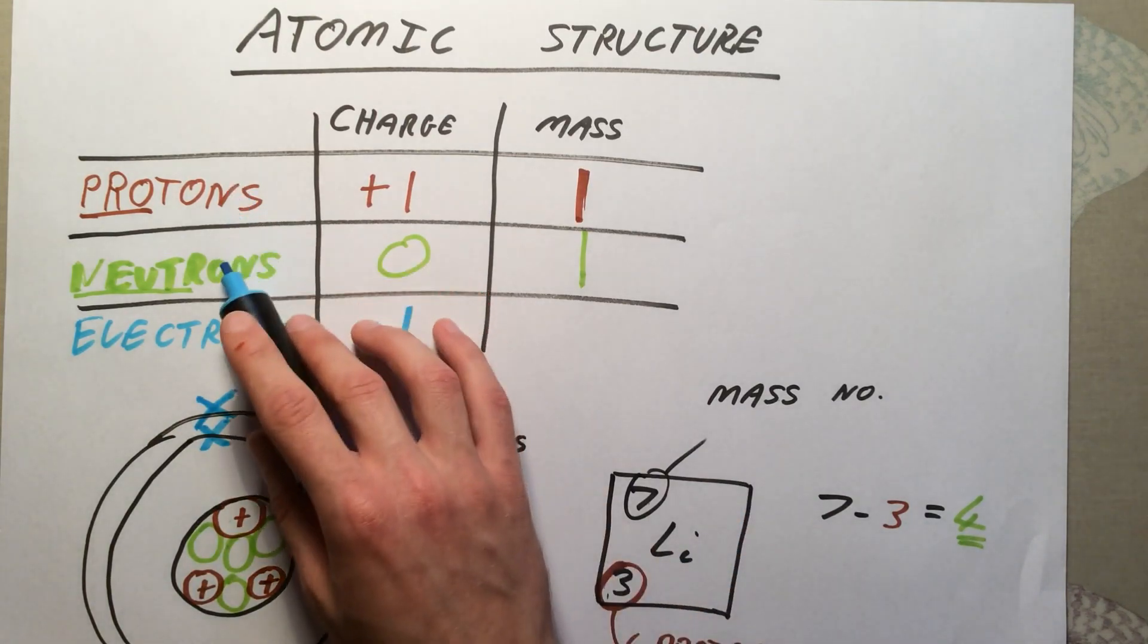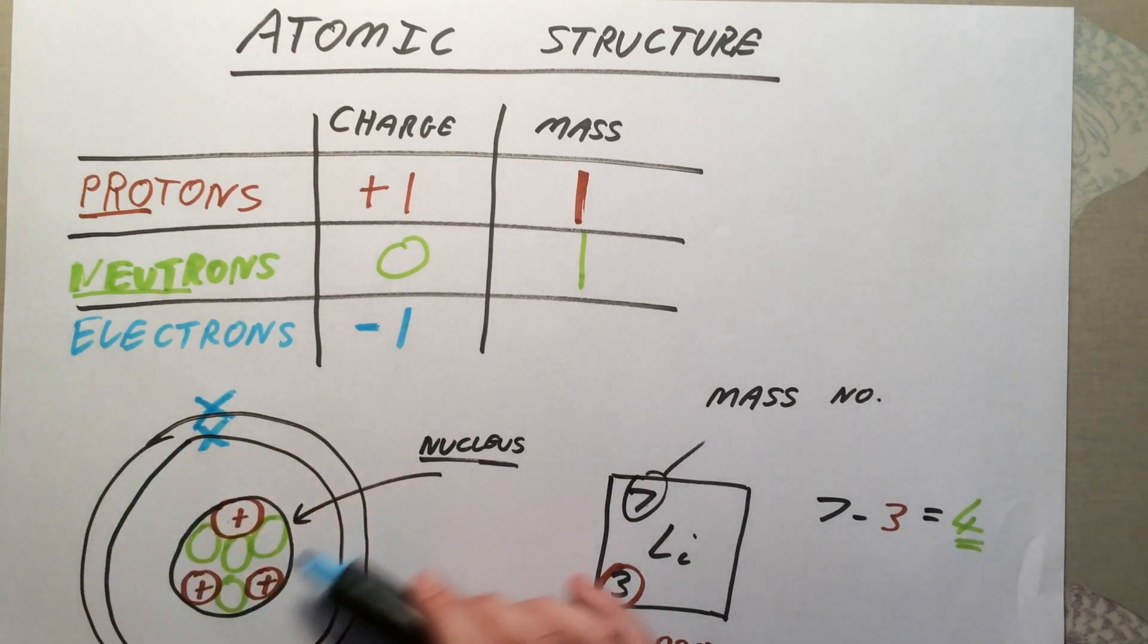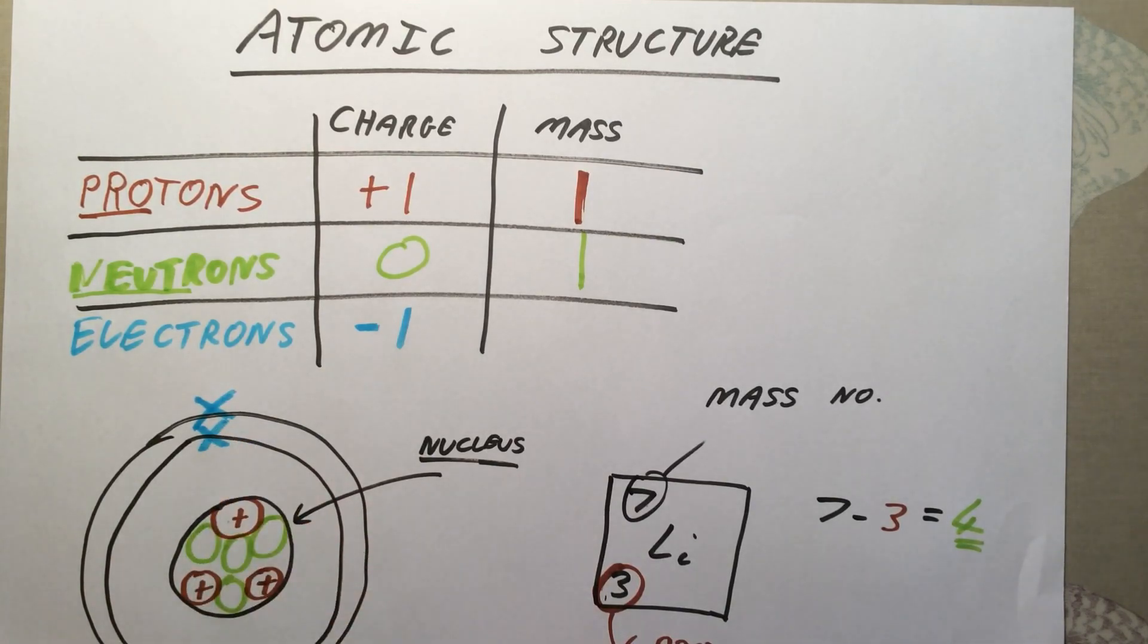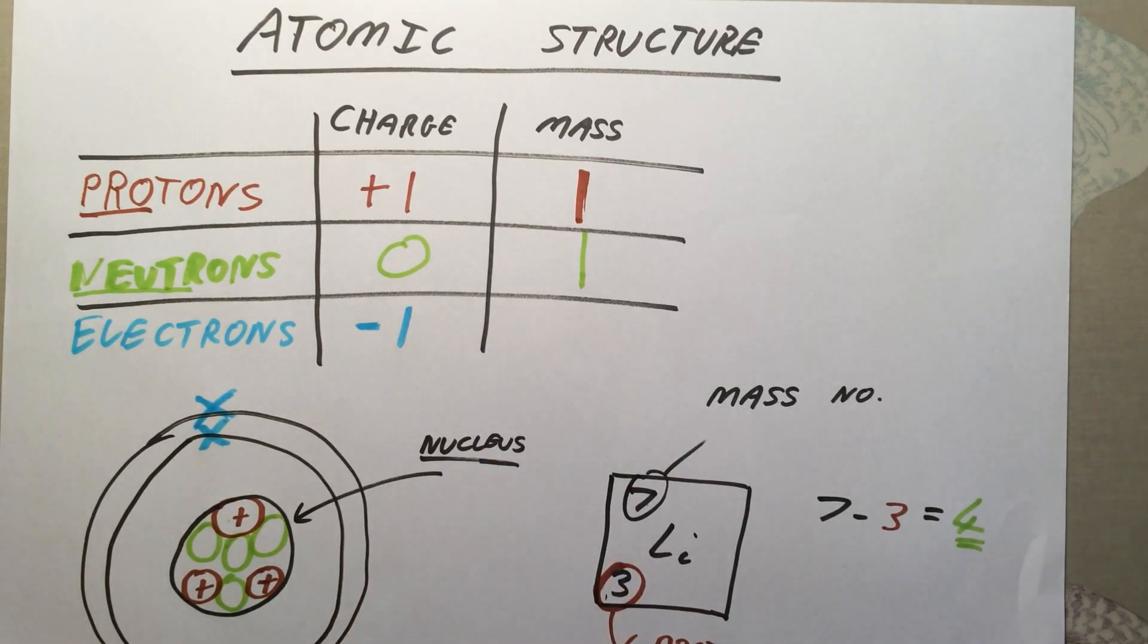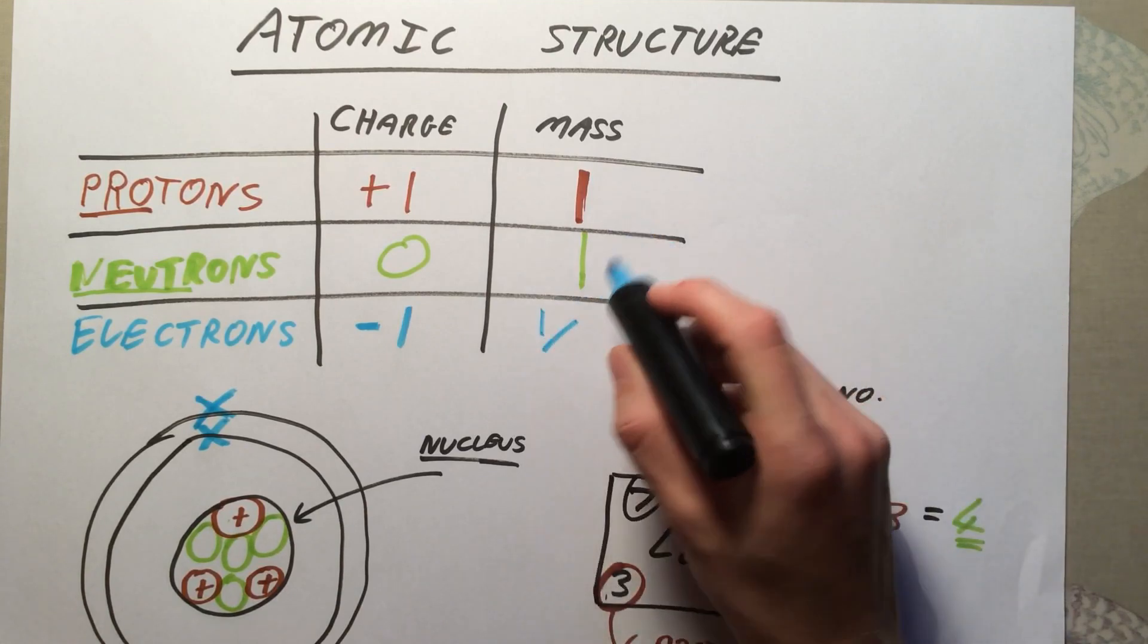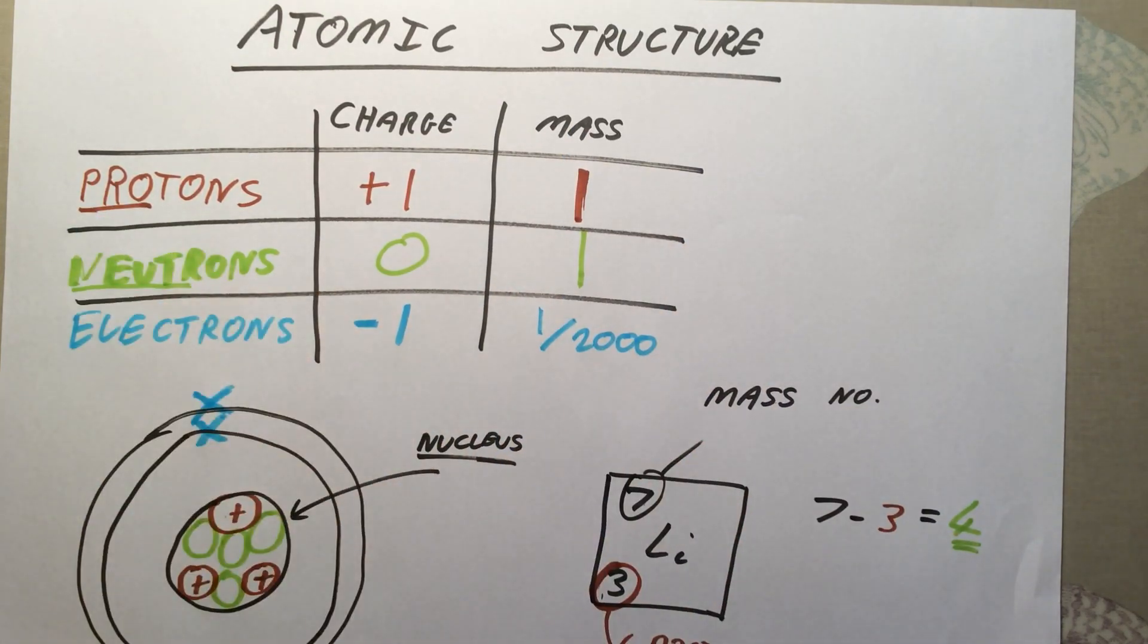We've already said that protons and neutrons contribute to this mass number. Why is that? If you think about an atom and imagine it is the size of Wembley Stadium, the electrons would be roughly the size of grains of sand whizzing around that stadium - they're absolutely tiny. The nucleus isn't actually that much bigger. It would be roughly the size of a grape on the center circle. So the nucleus of an atom is actually pretty small too. The majority of the atom is empty space. Electrons actually have a very, very small mass. The proper number is 1 over 1827. I always remember it as 1 over 2,000. So electrons have a mass of 1 over 2,000.